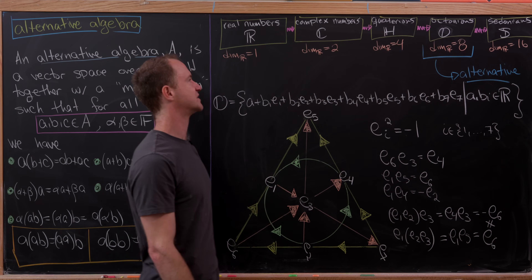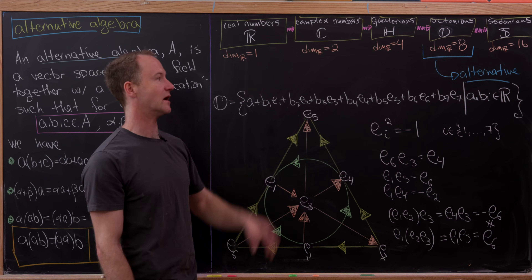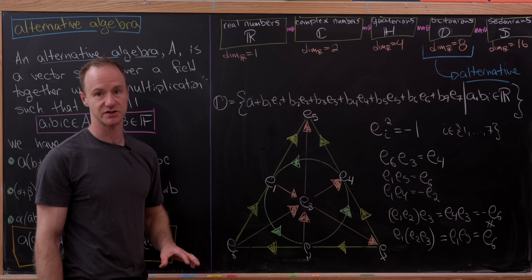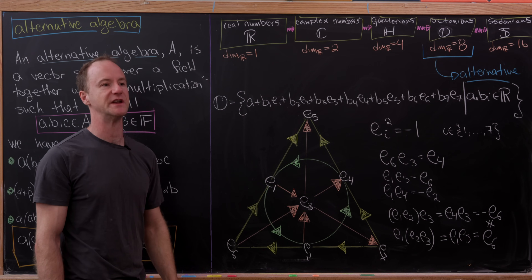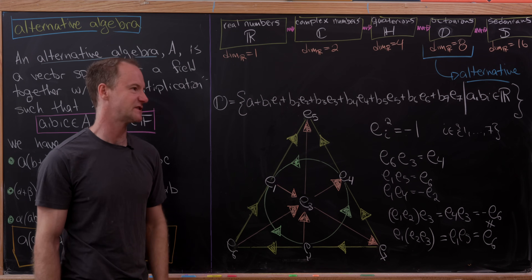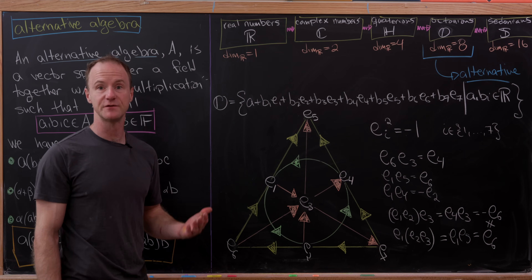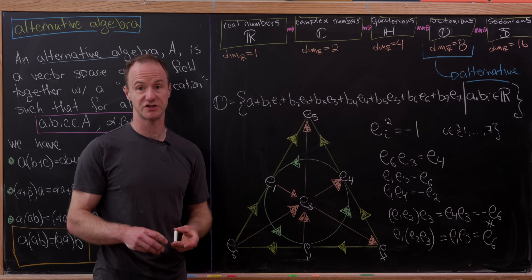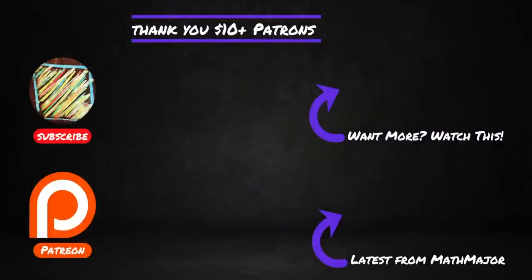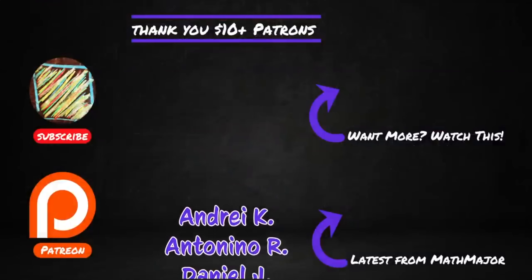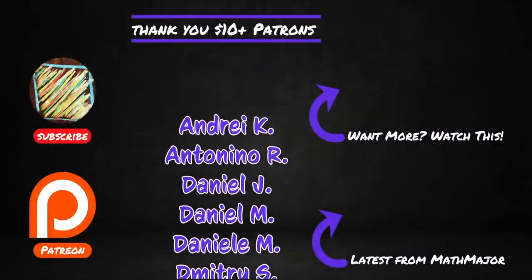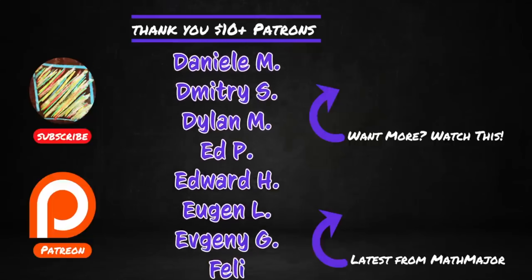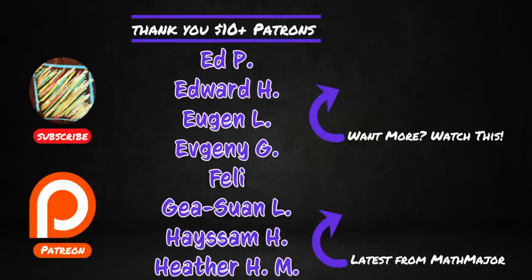This string of constructions starting at the real numbers and doubling the dimension each time is called the Cayley-Dickson construction. I think I'm going to make a whole video about it — post in the comments if you'd like to see that. And if you stuck around this long and you're not subscribed, maybe consider subscribing. It really helps the channel out. Thanks for watching and don't forget to like and subscribe.